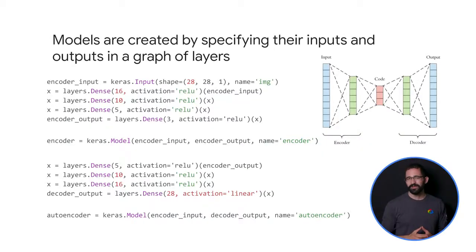In the functional API, models are created by specifying their inputs and outputs in a graph of layers. That means a single graph of layers can be used to generate multiple models. You can treat any model as if it were a layer by calling it on an input or an output of another layer. Let that one sink in, that's kind of cool. Note that by calling a model, you're not just reusing the architecture of the model, you're also reusing its weights.